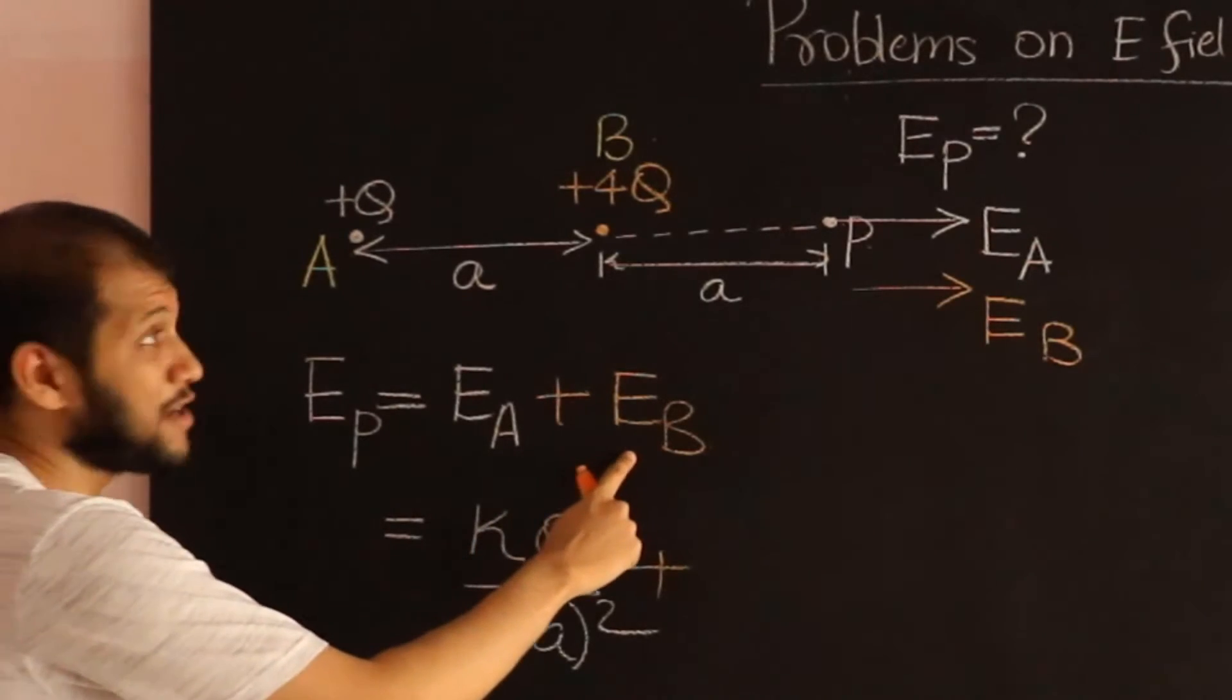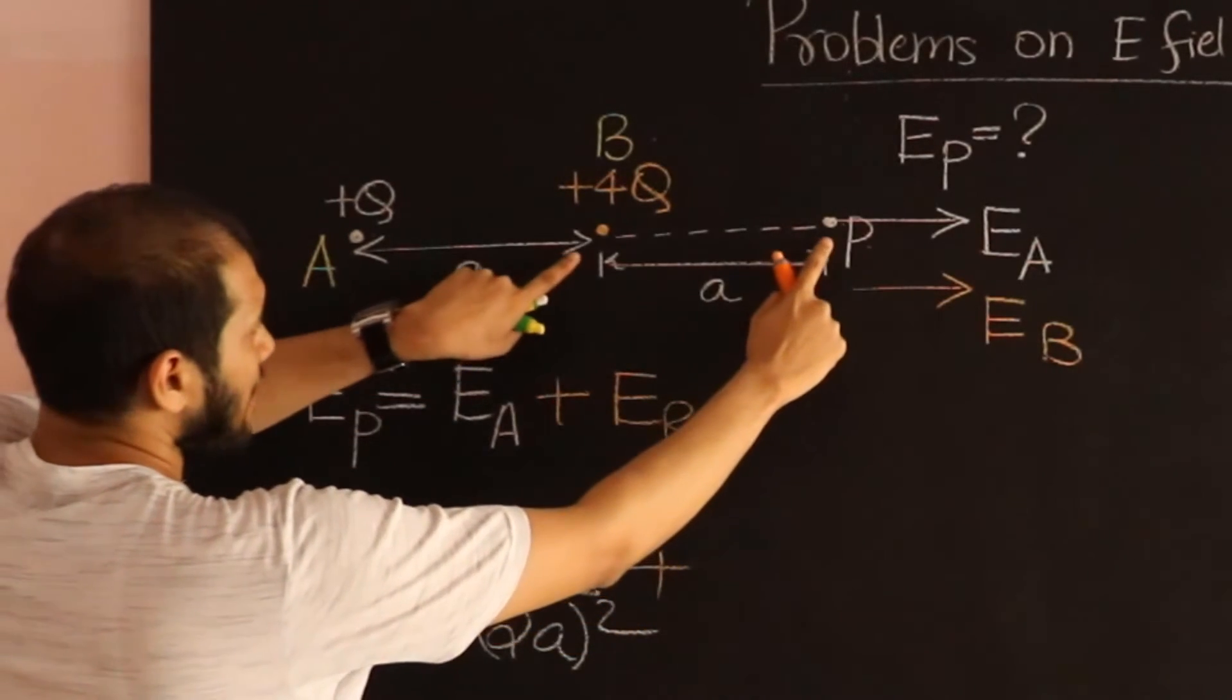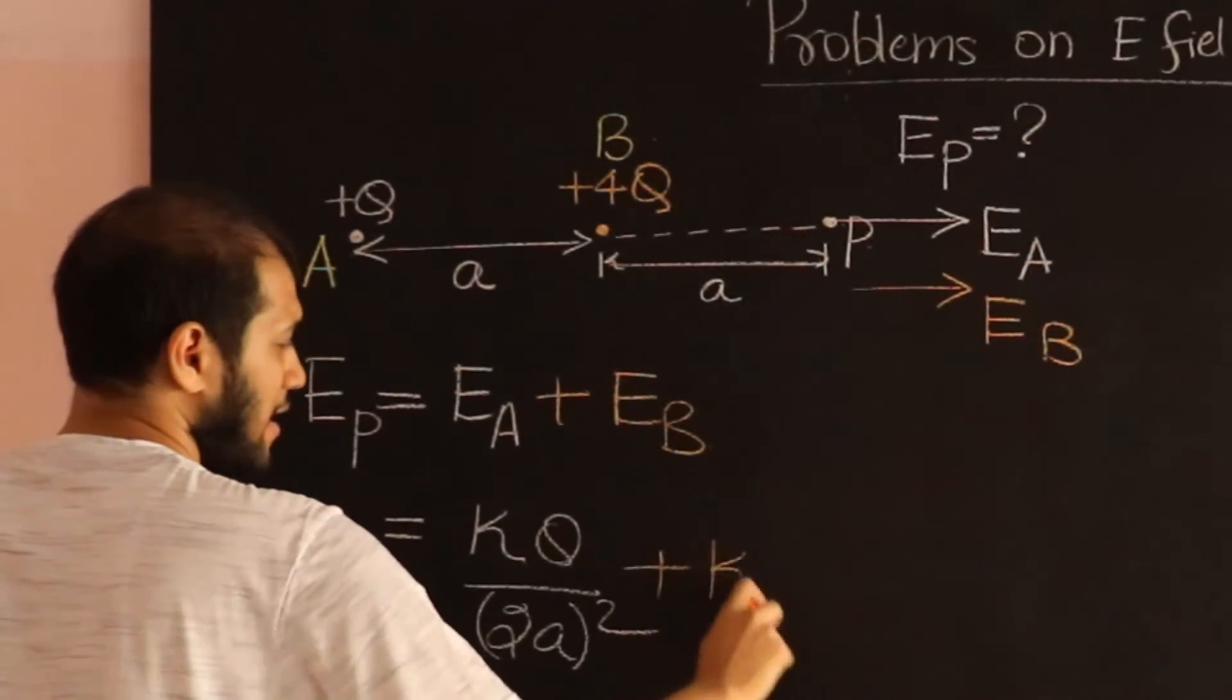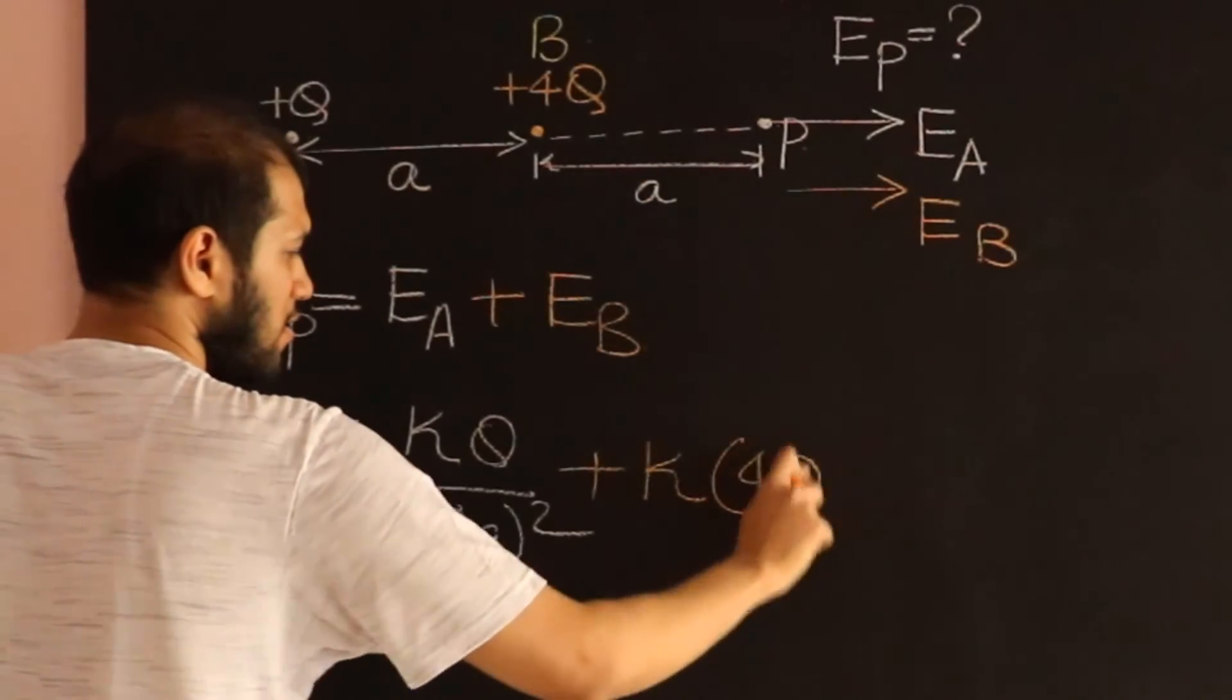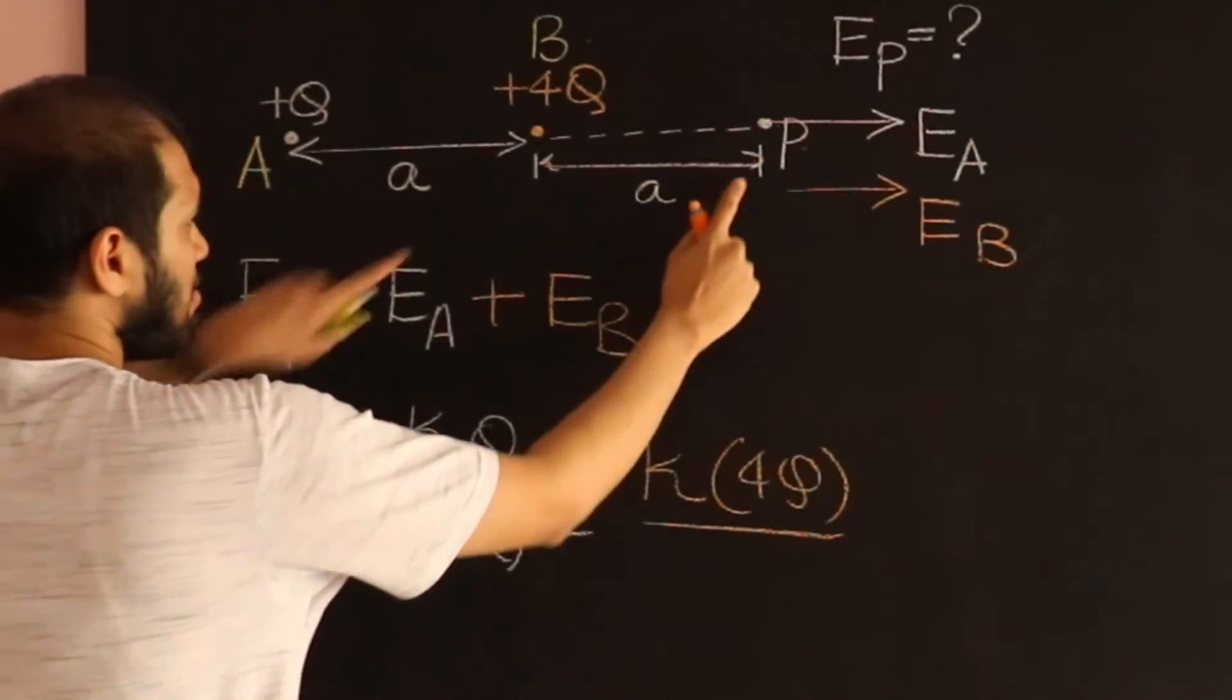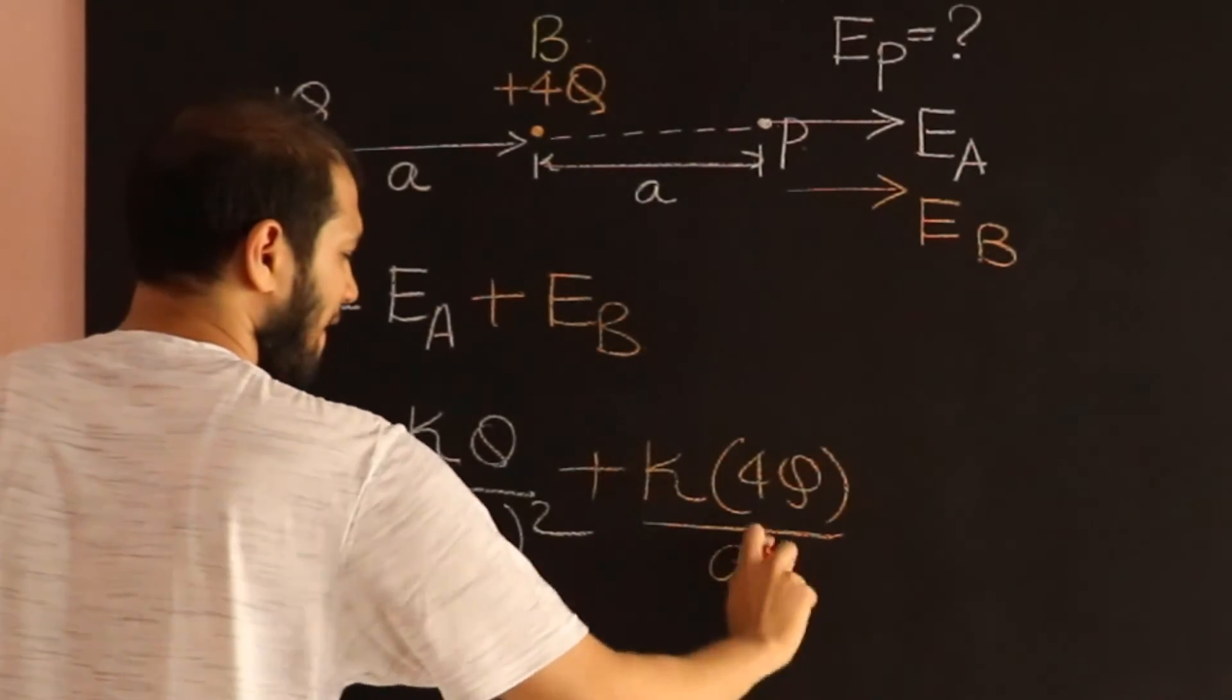Plus, electric field due to charge B. When I consider, I consider this distance. So it's going to be K times charge 4Q, divided by the distance squared, A squared.